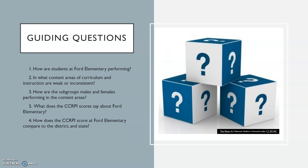Here are some guiding questions: How are students at Ford Elementary performing, and in what content areas of curriculum and instruction are weak or inconsistent? How are the subgroups — males and females — performing in the content areas? What does the CCRPI score say about Ford Elementary, and how does the CCRPI score at Ford compare to the district and state?